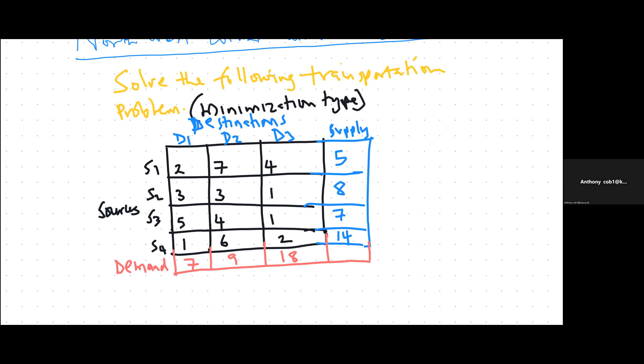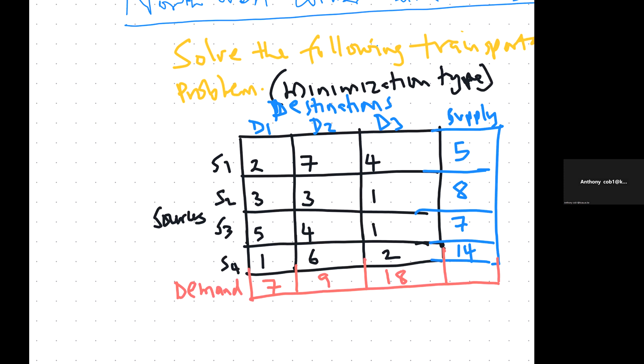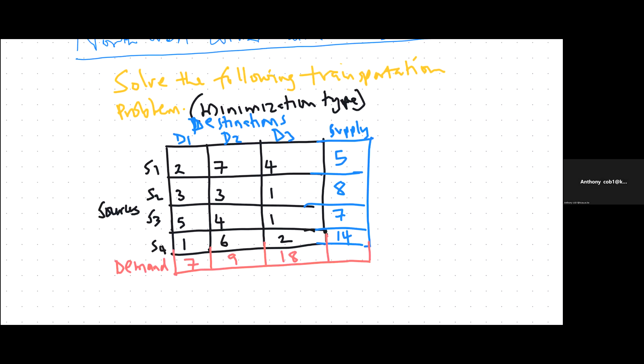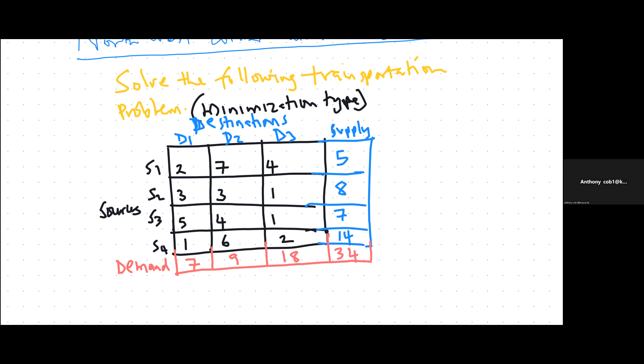Before you start solving this problem, you need to check whether it is balanced or not, and you do that by doing the row totals. You take five plus eight plus seven plus 14, and you also do the column totals. The column totals are seven, nine, and 18. If those two values are equal, we say that the problem is balanced. In our case, we realize these are a balanced transportation problem, and the total is 34. The row total is equal to the column total, which is 34. Once the problem is balanced, you start the process of solving it.